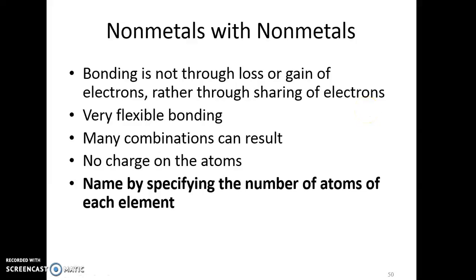We've talked about ionic compounds, but now we're going to move to covalent compounds. This is the nonmetals with nonmetals, and remember we share electrons with covalent bonding. It's very flexible bonding, and so as a result you have a huge number of possibilities.